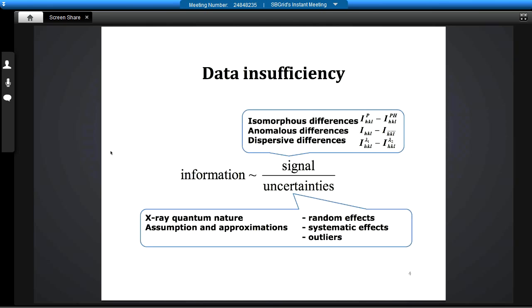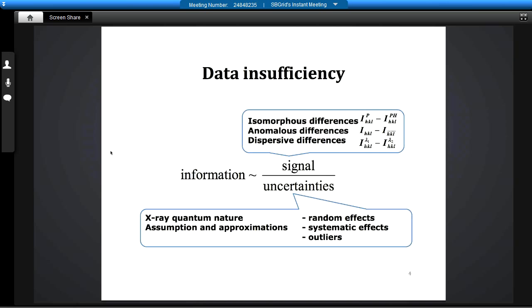What we care about is information. This is signal to noise. However, what we measure in crystallography is intensity. And the intensity by itself is not a phasing signal. Various types of methods rely on the differences between the intensities. And these differences are obviously much smaller than the measured intensity. In the same time, we have plenty of sources of the problem.